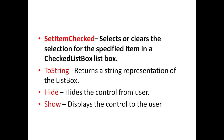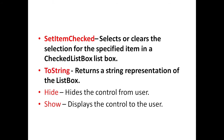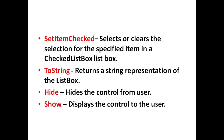SetItemChecked method selects or clears a selection for the specified item in a CheckedListBox. ToString method returns a string representation of the list box. Hide method hides the control from the user. And Show method displays the control to the user.